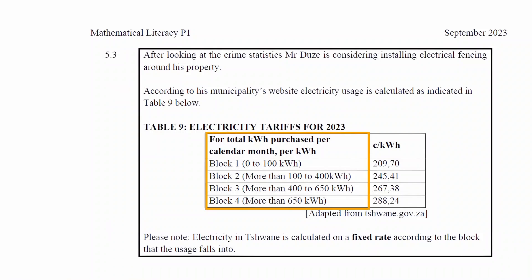The first column of the table lists the block and range of kilowatt hours purchased per calendar month, and the second column lists the rate of charge in cents per kilowatt hour. There is a note that states that electricity in Tshwane is calculated on a fixed rate according to the block that the usage falls into.